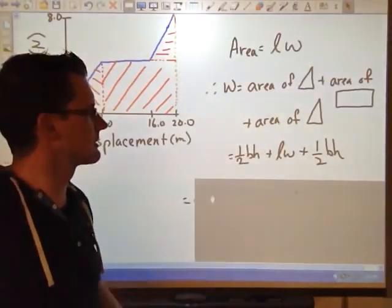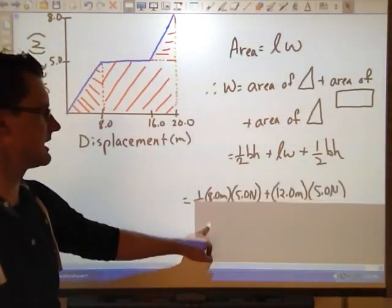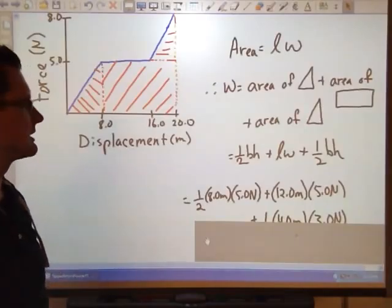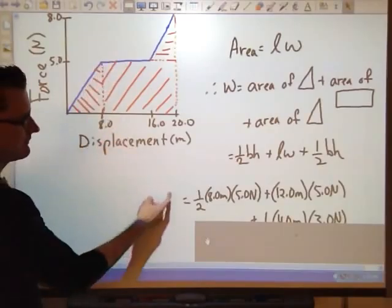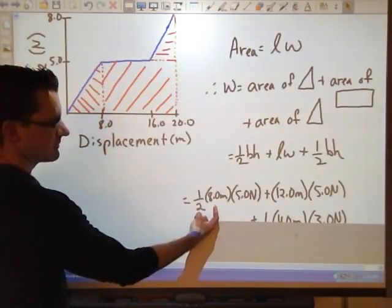So I could say, therefore, work is equal to the area of this triangle plus the area of this rectangle plus the area of that triangle there. And looking at that, of course, area of a triangle is a half base times the height.